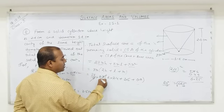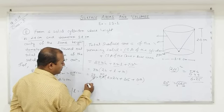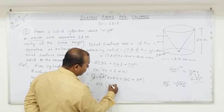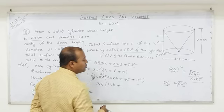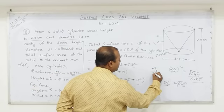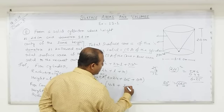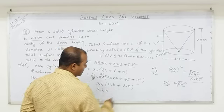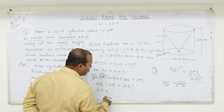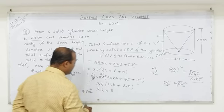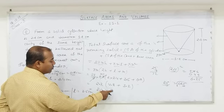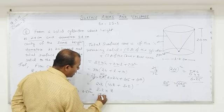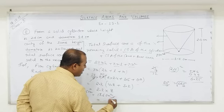Taking π and r common: 0.7/7 cancels to give 0.1 with 22. So 22 × 0.1 = 2.2. Then: 2 × 2.4 = 4.8, plus 2.5, plus 0.7 = 3.2. So 2.2 × (4.8 + 3.2) — working through gives 17.6 cm².